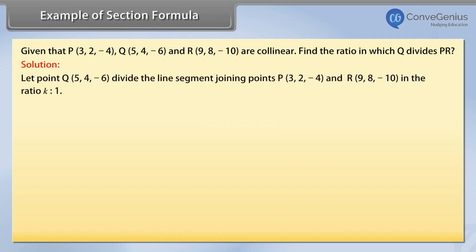Solution. Let point Q (5, 4, -6) divide the line segment joining points P (3, 2, -4) and R (9, 8, -10) in the ratio k:1.